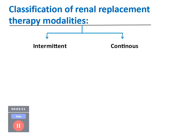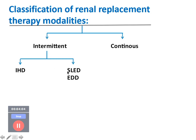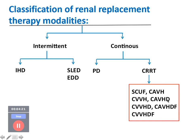To classify renal replacement therapy modalities: there are two major categories — intermittent and continuous. Under intermittent, you have intermittent hemodialysis, the conventional dialysis for chronic kidney disease seen on an OPD basis, and also extended or sustained low-efficiency dialysis. Under continuous, you have peritoneal dialysis and CRRT — continuous renal replacement therapy — which includes CAVHD, CVVHD, SCUF (slow continuous ultrafiltration), and CVVHDF.